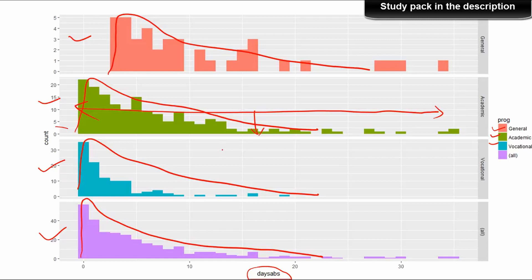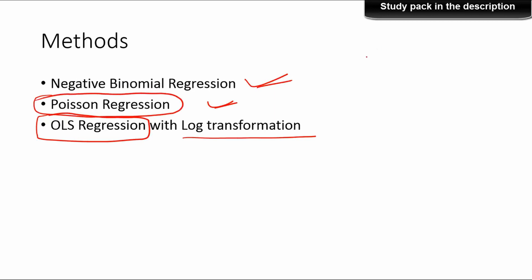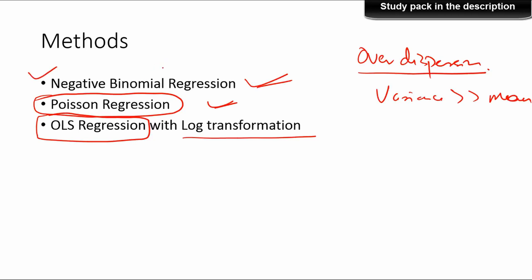So that is the main reason why we go with negative binomial regression instead of Poisson regression. You can also verify that statistically by calculating the mean and variance of the data. The three options are: negative binomial regression, Poisson regression, and OLS regression with log transformation of the dependent variable. We are ruling out Poisson regression because there is over-dispersion — the variance is much higher compared to the mean — so we go with negative binomial regression.